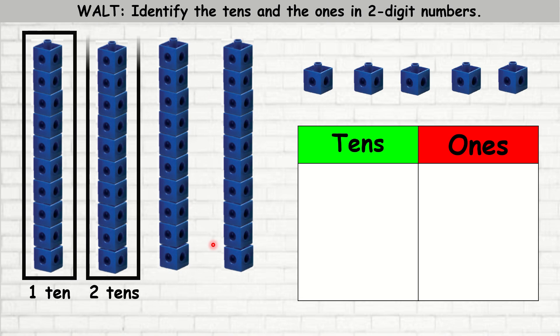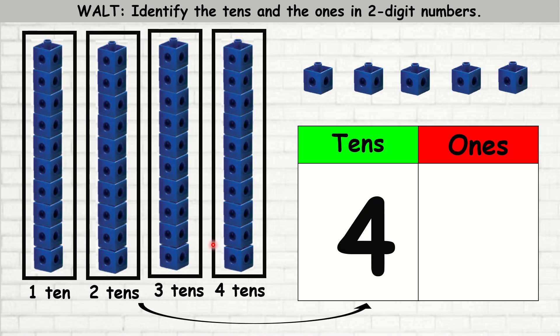Here I have one, two, three, four tens. And I have how many ones? One, two, three, four, five. Five ones. So to read that number, we would say four tens and five ones is 45.